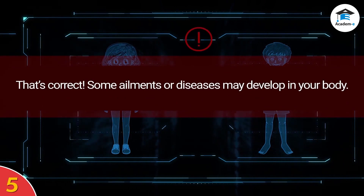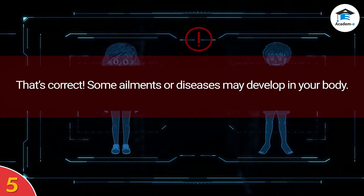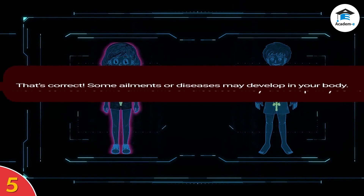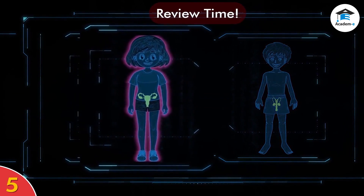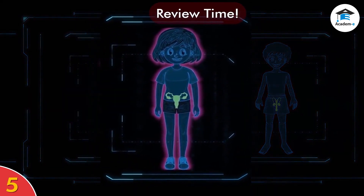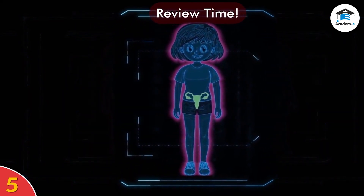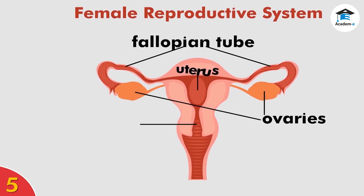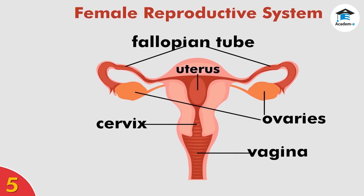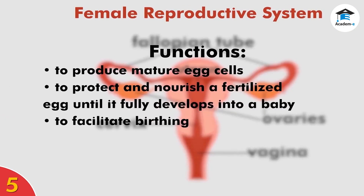That's correct. If you are not taking care of your reproductive system, then some ailments or diseases may develop in your body. To help you understand these ailments, let us review the parts and functions of the reproductive system. The female reproductive system comprises the ovaries, fallopian tube, uterus, cervix, and vagina. They work together to produce mature egg cells, protect and nourish a fertilized egg until it fully develops into a baby, and to facilitate birthing.